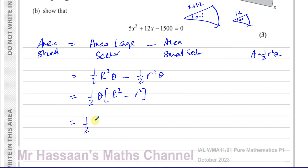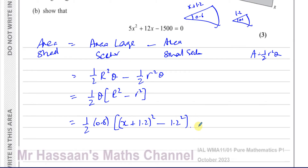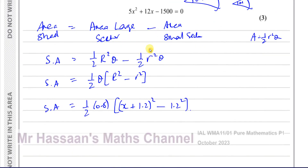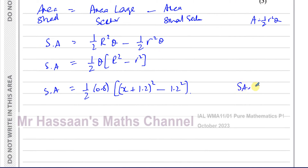Taking out the common factor of one-half theta, we get one-half times 0.6 times (big R squared minus little R squared). Substituting: one-half times 0.6 times [(X plus 1.2) squared minus 1.2 squared]. We know the shaded area equals 90 metres squared, so we can form an equation.